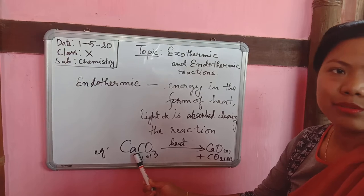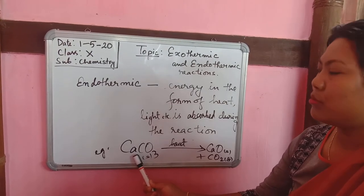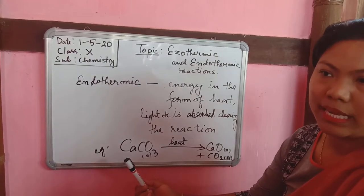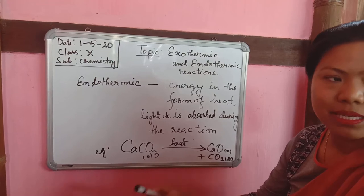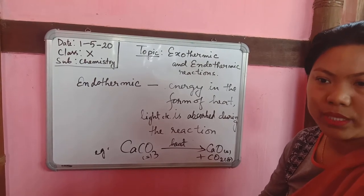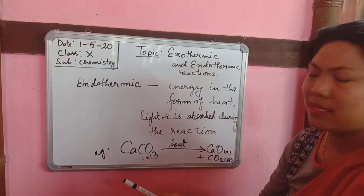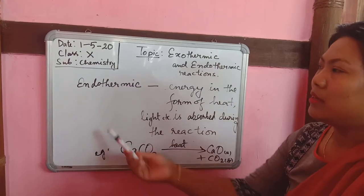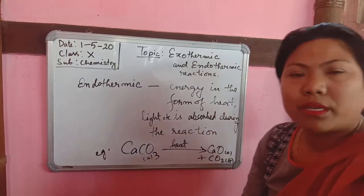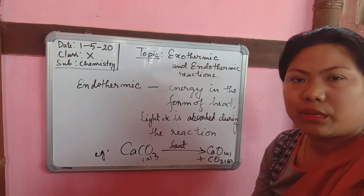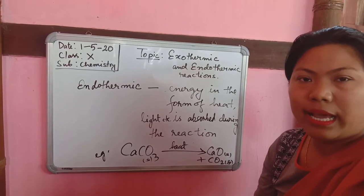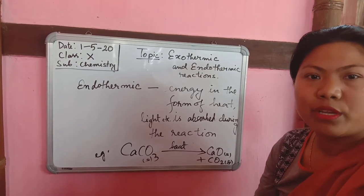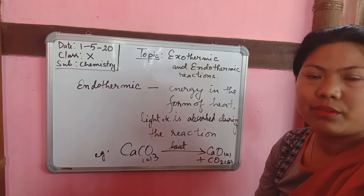Another example of an endothermic reaction is electrolytic decomposition, where electric current is passed and breaks down water to give hydrogen gas and oxygen gas. In general, endothermic reactions are those reactions in which heat, light, or any form of energy is absorbed during the reaction.